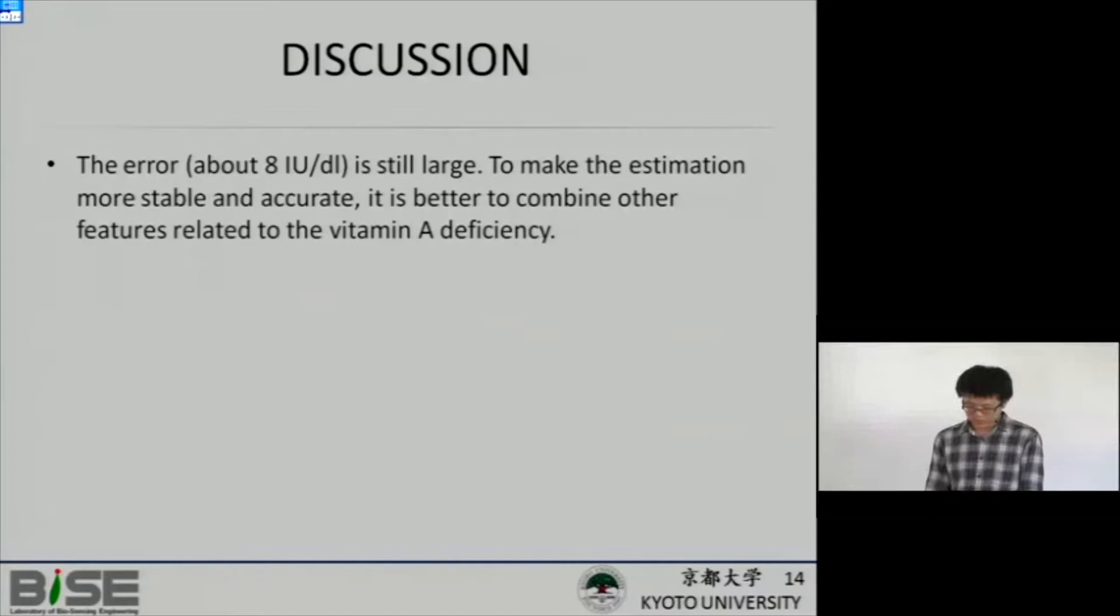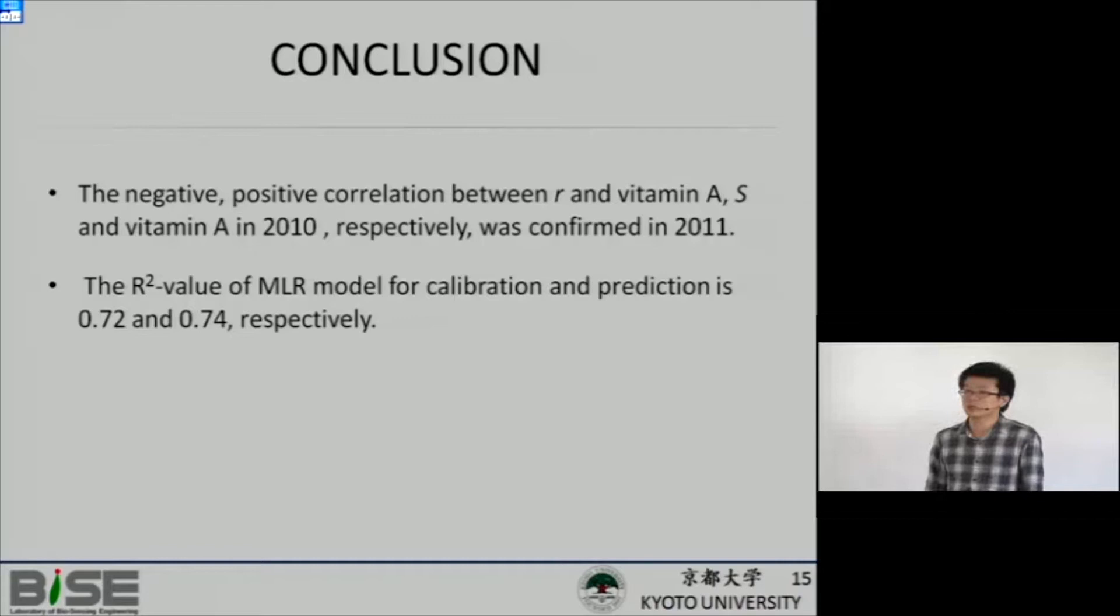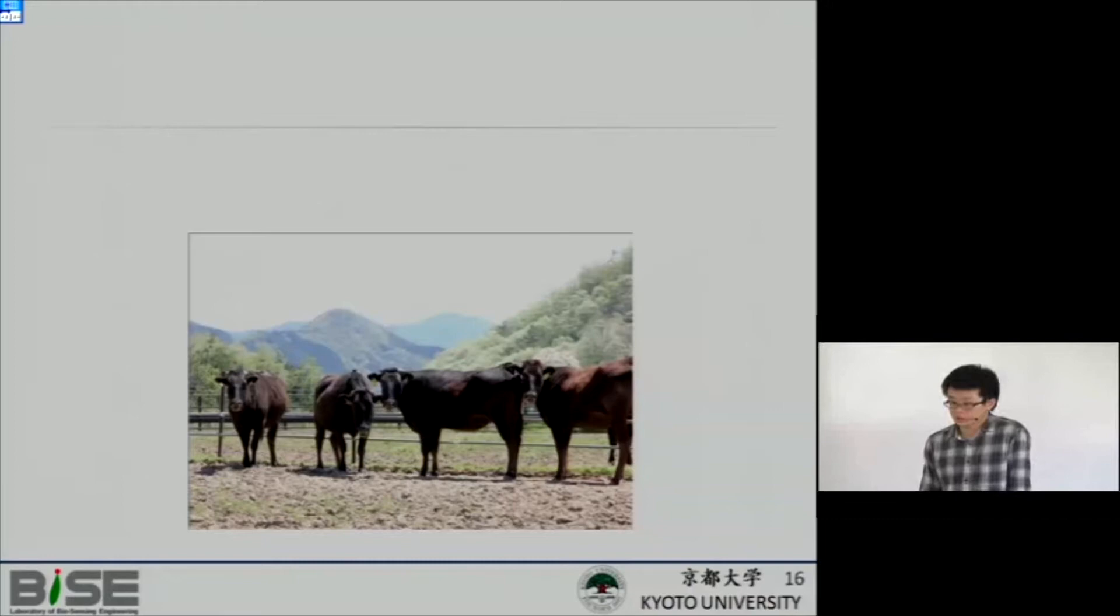In the discussion part, the error now is about 8 IU per deciliter, which is still large. To make the estimation more stable and accurate, it's better to combine other features related to vitamin A deficiency. In conclusion, the negative and positive correlation between small r and vitamin A, and S and vitamin A in 2010 was confirmed in 2011. The R-squared value for calibration and prediction is 0.72 and 0.74 respectively. Thank you for your attention.